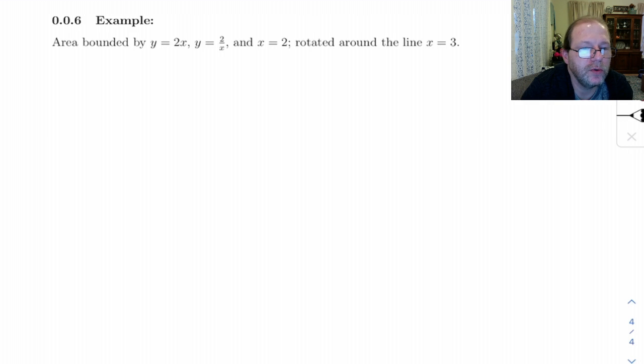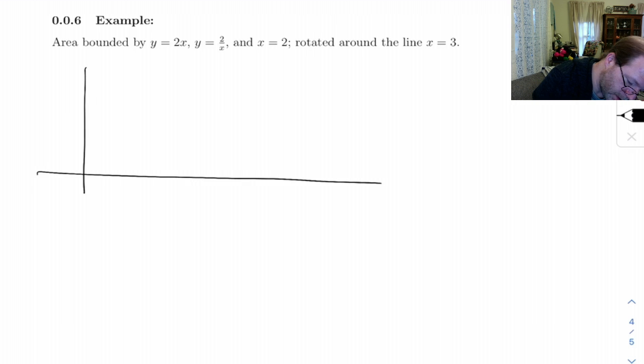On example 6, we've got y equals 2x, y equals 2 over x, and x equals 2 for our boundaries. So let's see, y equals 2x, we know that's a line with slope of 2. 2 over x is a hyperbola like this, and x equals 2 is going to be over here.